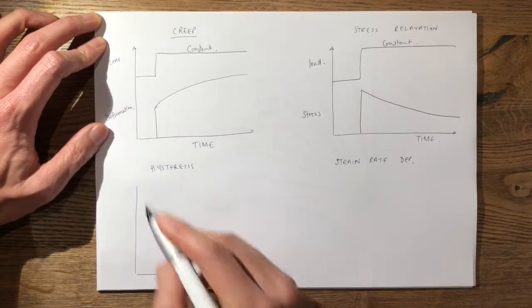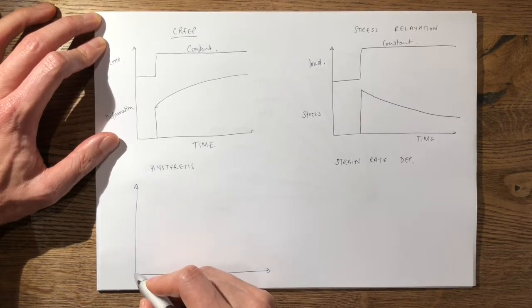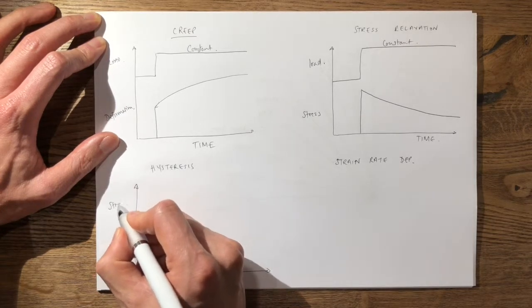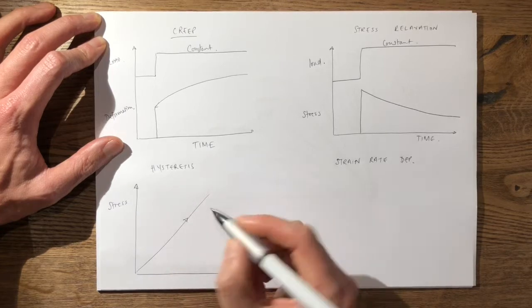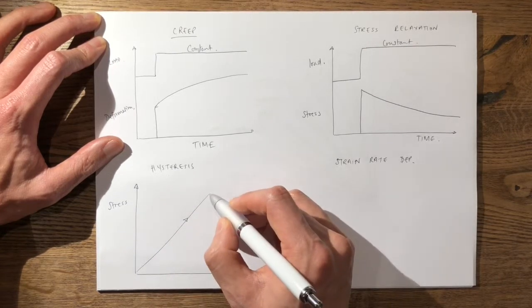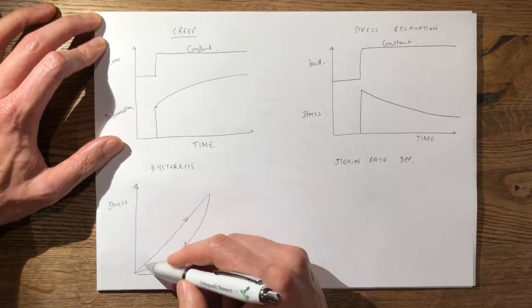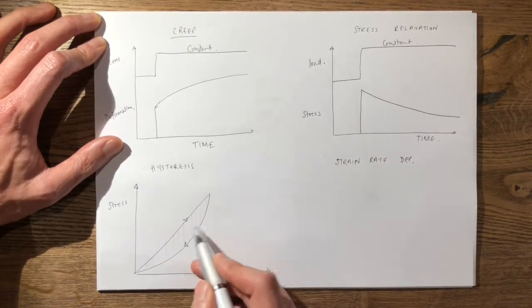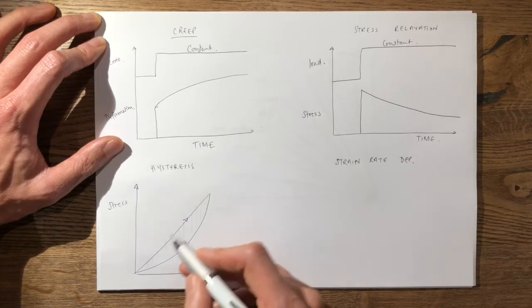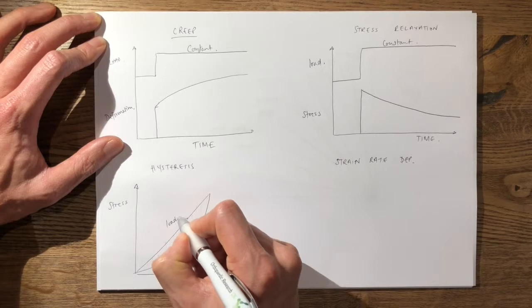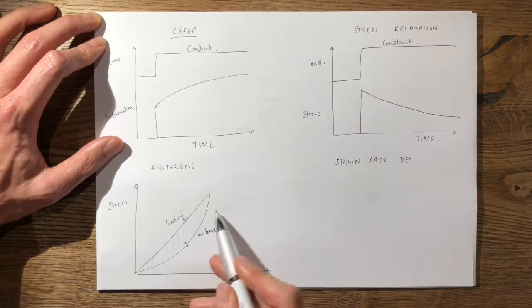The next thing I want to draw is hysteresis. Now this means in a viscoelastic material you'll have different loading, and then once it unloads it takes a different path. The area between the loading and unloading illustrates the amount of energy that is lost due to the internal friction of the material when it's unloaded. So this is loading and this is unloading, and this energy is often lost as heat due to the internal friction.